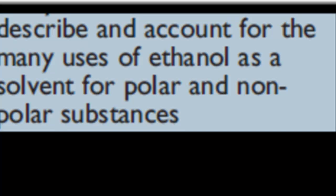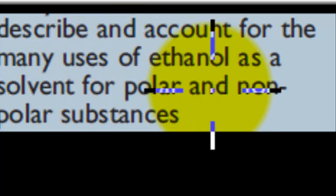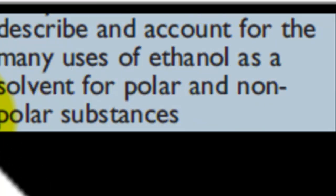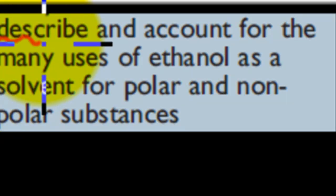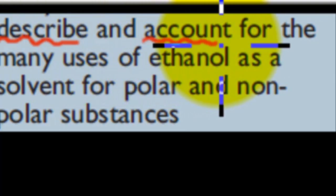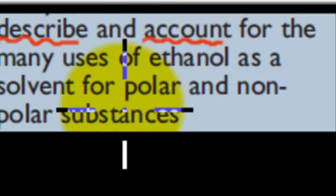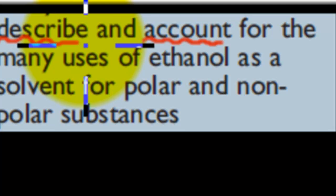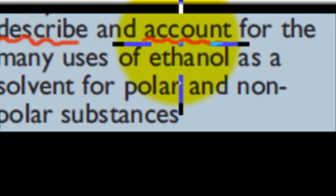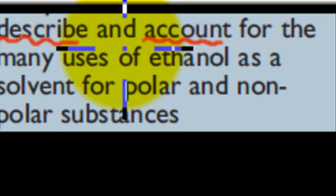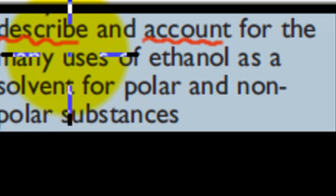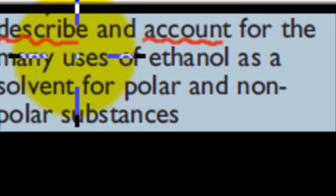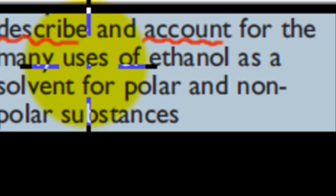The dot point says: describe and account for the many uses of ethanol as a solvent for polar and nonpolar substances. We've got two verbs mentioned — describe and account. 'Account' means we have to explain why ethanol is used as a solvent for polar and nonpolar substances — what properties it has to make it a good solvent. 'Describe' means we name and explain the uses of ethanol as a solvent.